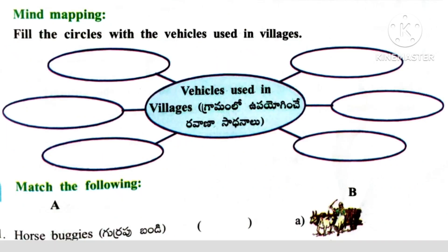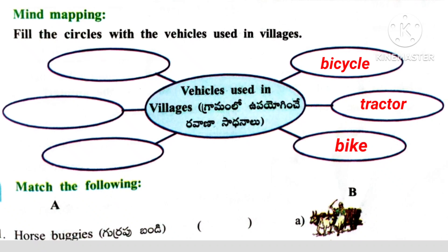Here given mind mapping: vehicles used in villages — bicycle, tractor, bike, bull cart, auto, bus.